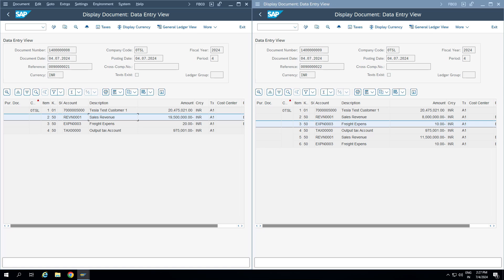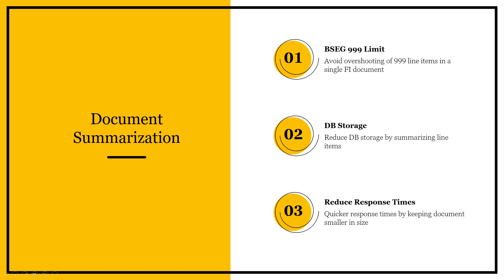Document summarization is required to reduce the number of line items, and we need this to satisfy the BSEG restriction of a maximum of 999 line items in the BSEG table. If a billing document, FIMM document, or FI document has more than 999 line items, we need to implement a SAP note which will split the document into two linked documents — anything beyond 999 line items posts in a second document linked to the first.